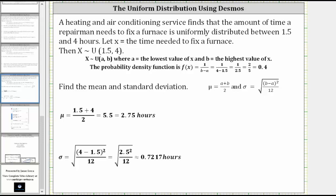is uniformly distributed between 1.5 and 4 hours. The probability density function is f(x) equals 1 divided by the quantity b minus a, where b is the highest value of x and a is the lowest value of x, giving us f(x) equals 1 divided by 2.5